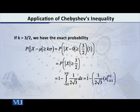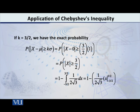I will have the following: the probability of the absolute value of X minus mu being greater than or equal to k·sigma. That is the same as the probability of the absolute value of X minus 0 — since mu equals 0 — being greater than or equal to 3/2 times 1, since k is 3/2 and sigma is 1. So this equals the probability of |X| being greater than or equal to 3/2, which is the same as 1 minus the probability of |X| being less than 3/2.